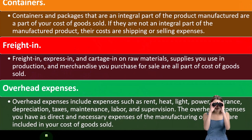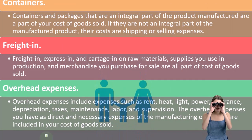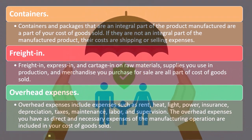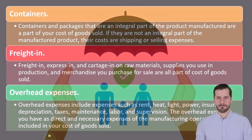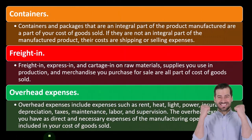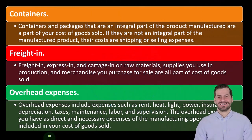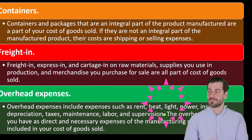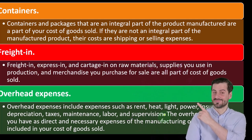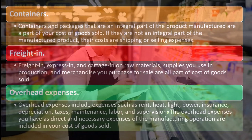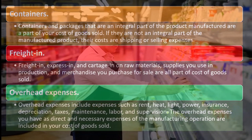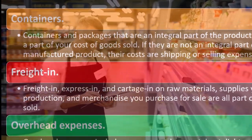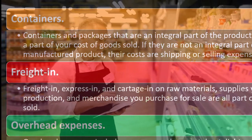Overhead expenses include expenses such as rent, heat, light, power, insurance, depreciation, taxes, maintenance, labor, and supervision. If there's a manufacturing process, anything in the warehouse — distinct from the administrative office and sales areas — is part of the manufacturing process. All the labor, lights, power, insurance, and depreciation on equipment in there is part of making the inventory. Therefore, it would not be expensed as a normal operating expense, but rather capitalized or included as part of cost of goods sold and expensed when the inventory is sold.